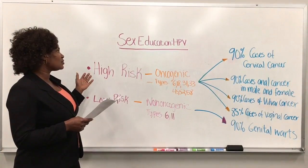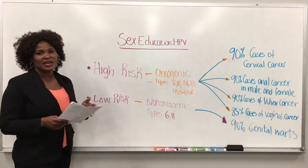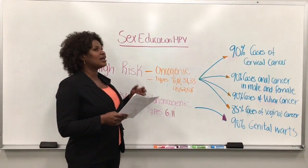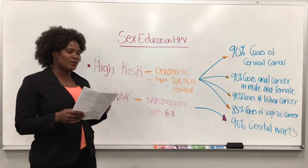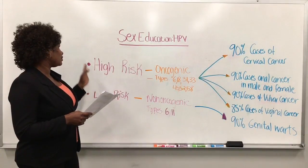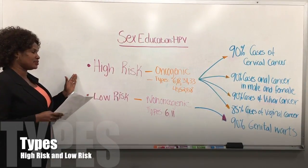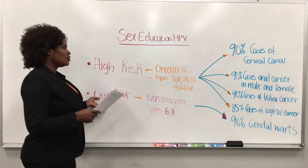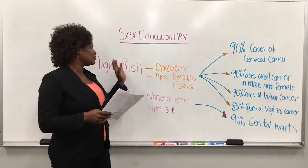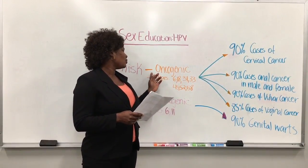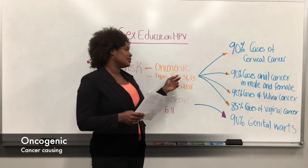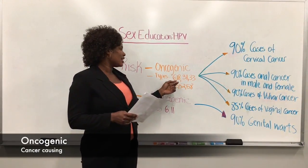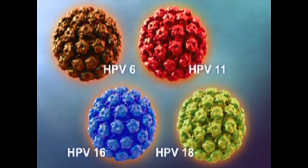We have so many types of HPVs. However, not all of them are disease-causing or harmful to our health. I would like to talk about two types: the high-risk and the low-risk. The high-risk types are the cancer-causing ones — we call them oncogenic. These types are 16, 18, 31, 33, 45, 52, and 58.